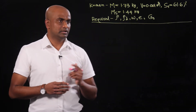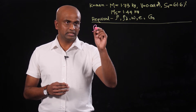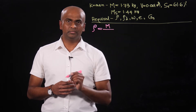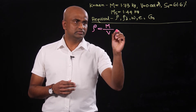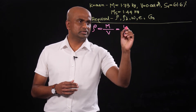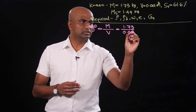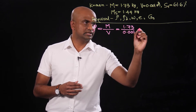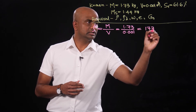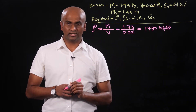Starting with the bulk density of the soil: bulk density is defined as the total mass of soil divided by the volume of soil. The soil sample has a mass of 1.73 kilograms and the measured volume is 0.001 cubic meters. That gives a bulk density of 1730 kilograms per cubic meter.